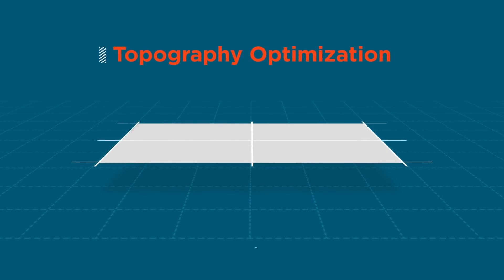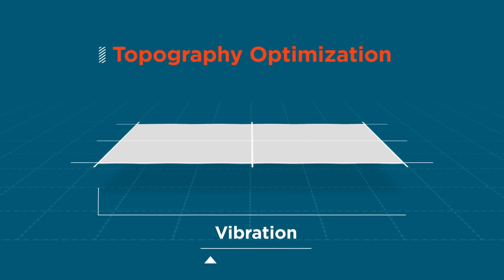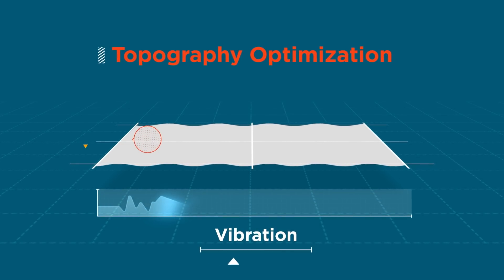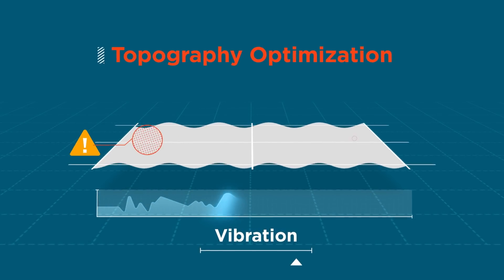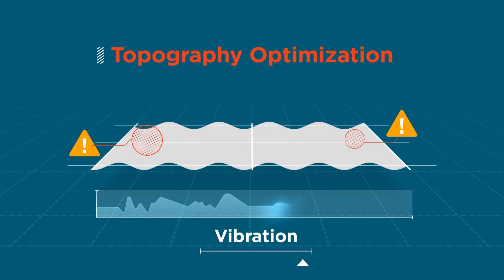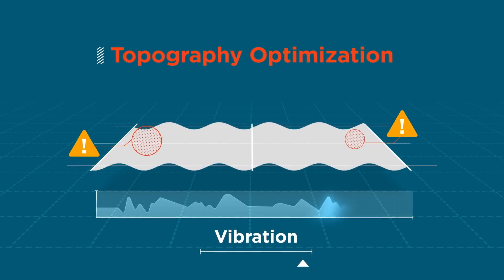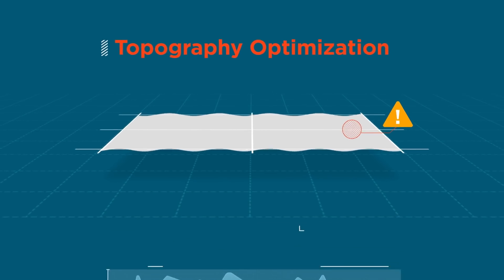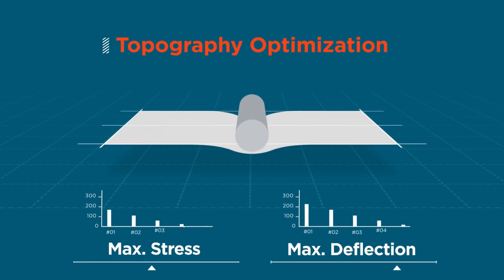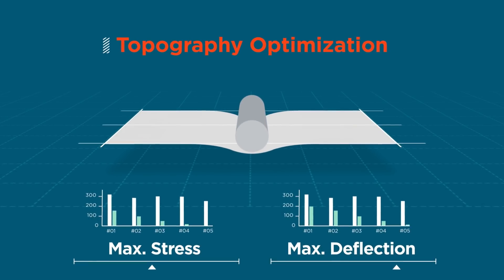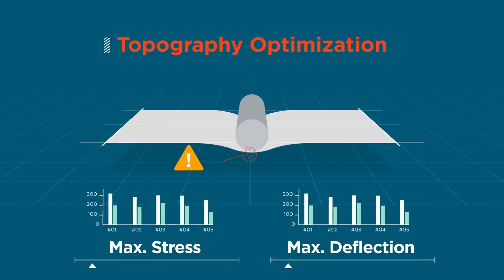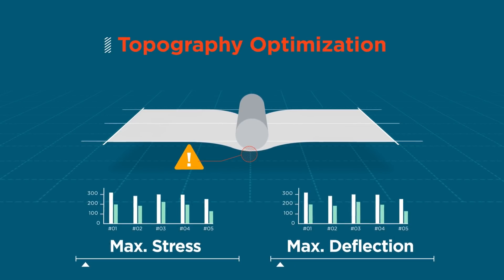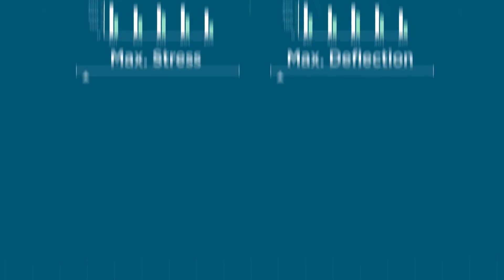Topography Optimization helps manufacturers to design and optimize any thin-walled part. Like a drumskin, these thin sheet structures can be easily excited, causing undesirable noise, vibration, and even damage under certain conditions.